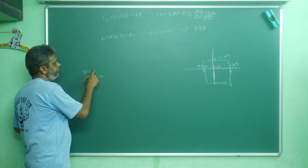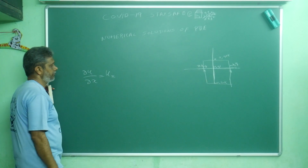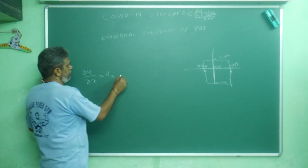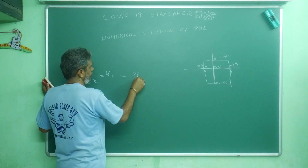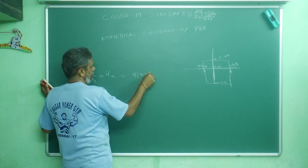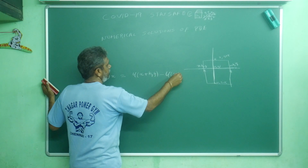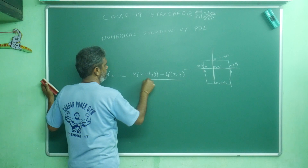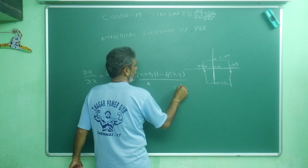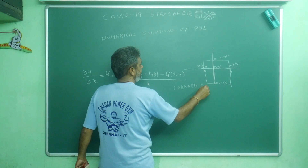For ∂u/∂x — differentiating with respect to x — u may be a function of x or a function of x and y. The forward difference formula is: ∂u/∂x = [u(x+h, y) − u(x, y)] / h. This is called the forward difference formula.